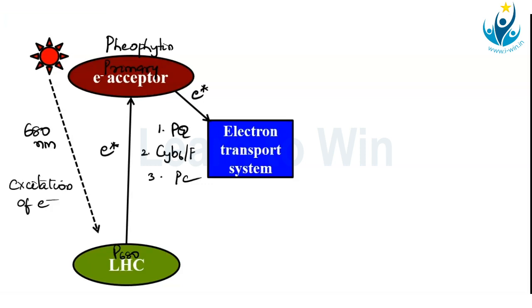And when these electrons are passing through this electron transport system, ADP is converted into ATP. So ATP is formed during this system which is photosystem 2, PS2. So this is photosystem 2 where you are having the formation of ATP.